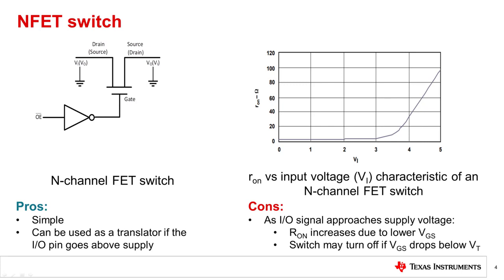When the output enable (OE) signal is low, the voltage at the gate is high or equal to VCC. If the voltage at the drain V_I is less than VCC by the threshold voltage of the N-channel transistor, the on-resistance is low and the source voltage equals V_I. If V_I approaches VCC, R_on increases rapidly, the source voltage does not increase with the drain voltage, and the output remains at VCC minus V_T. The R_on versus V_I curve shows the general shape of these characteristics for a typical NMOS series switch.